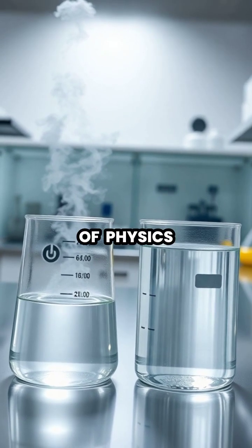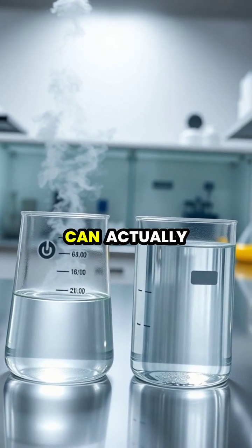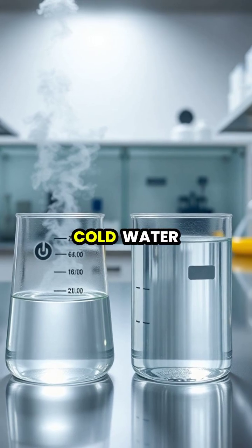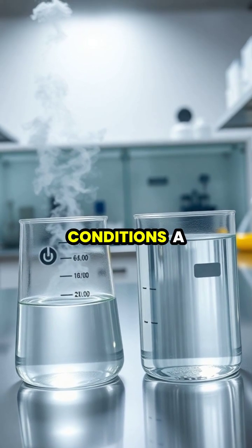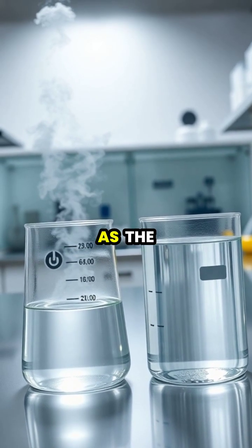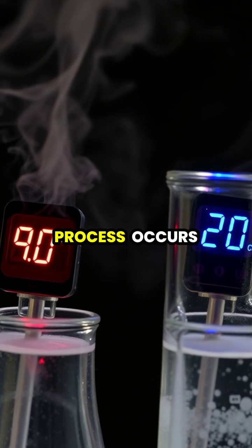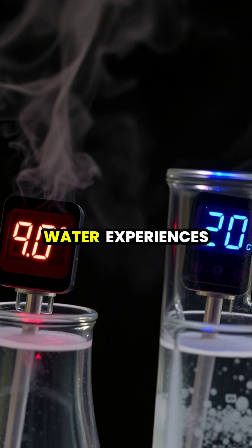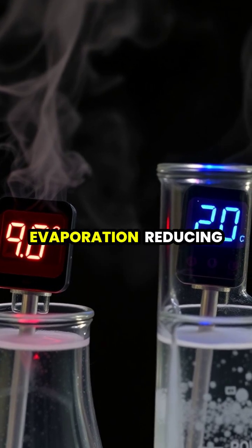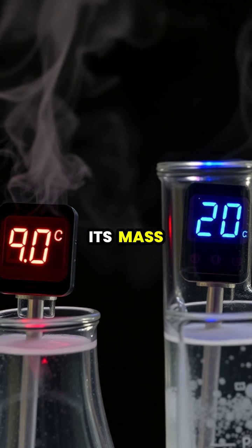In a fascinating paradox of physics, hot water can actually freeze more quickly than cold water under specific conditions—a phenomenon known as the Mpemba effect. This counterintuitive process occurs because hot water experiences more rapid evaporation, reducing its mass and allowing the remaining water to freeze more efficiently.